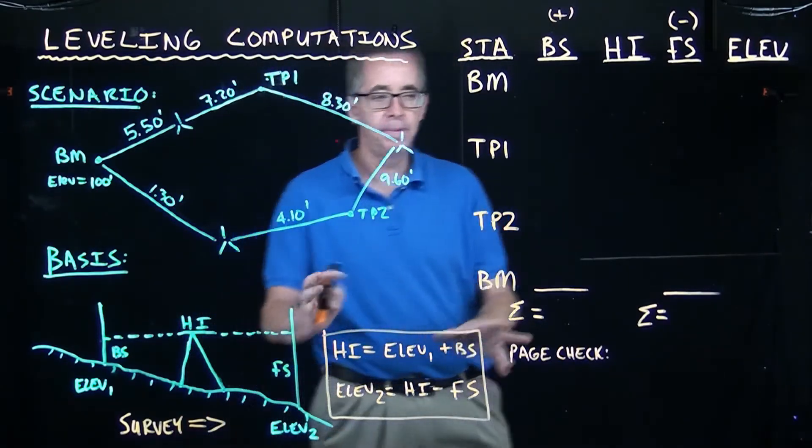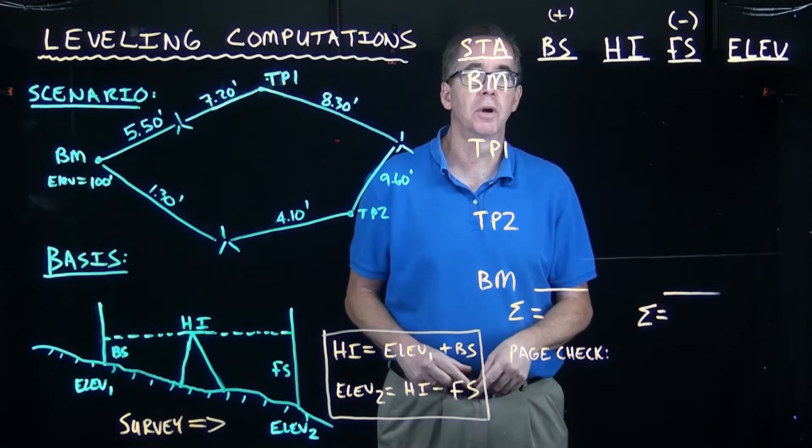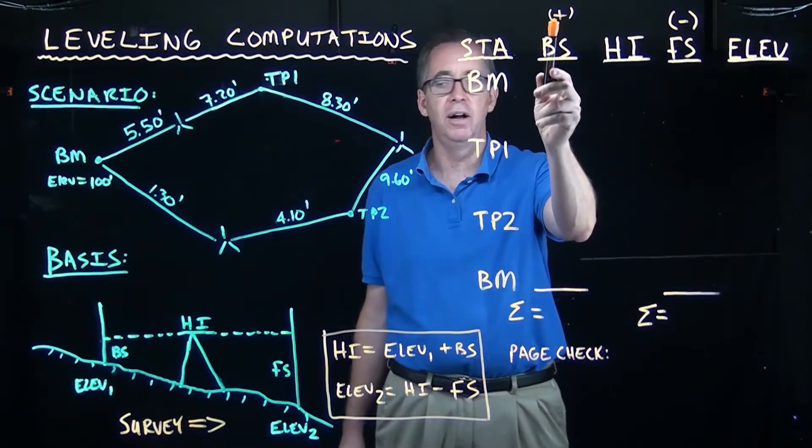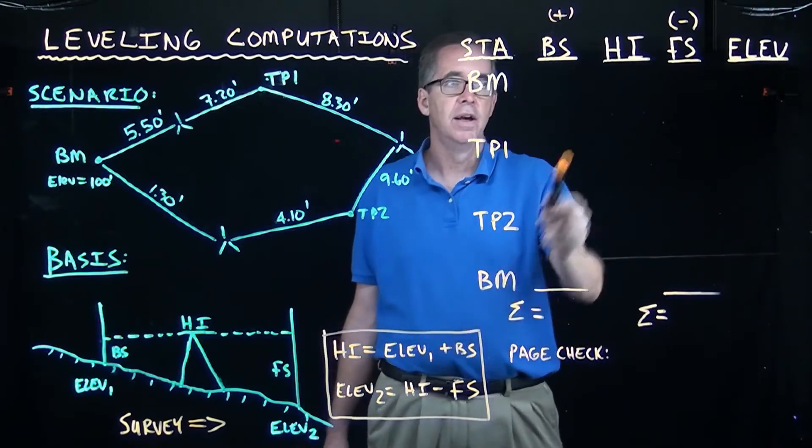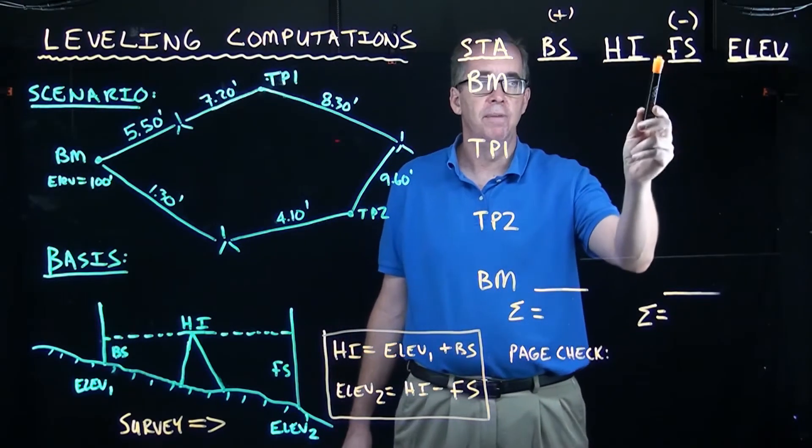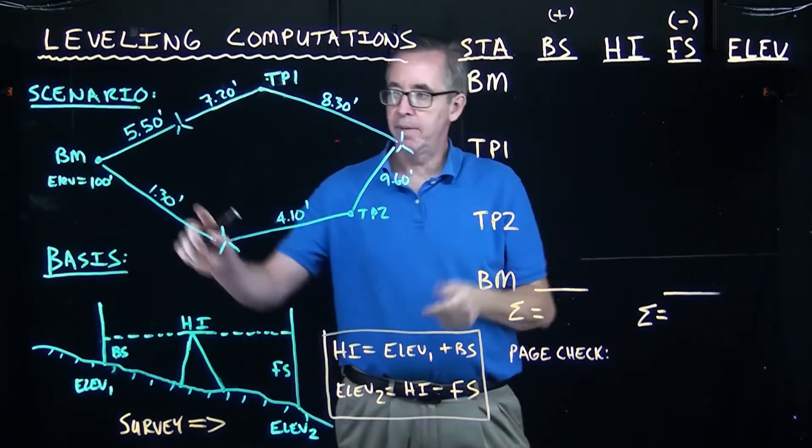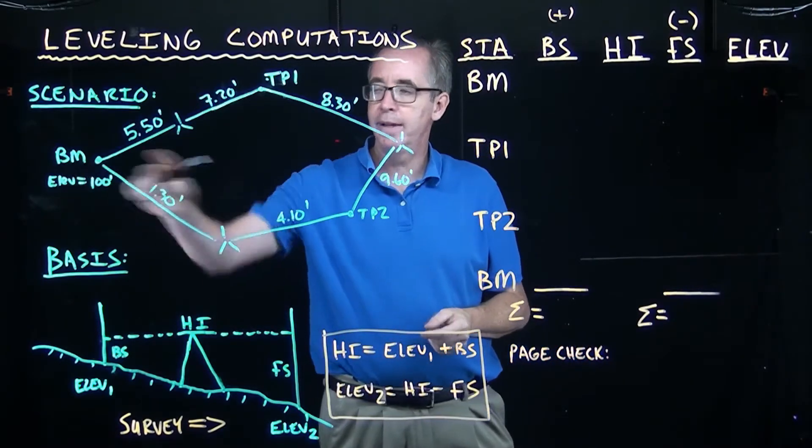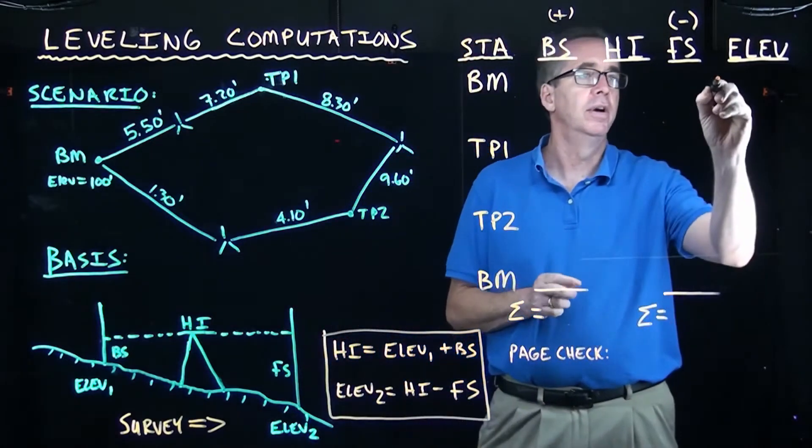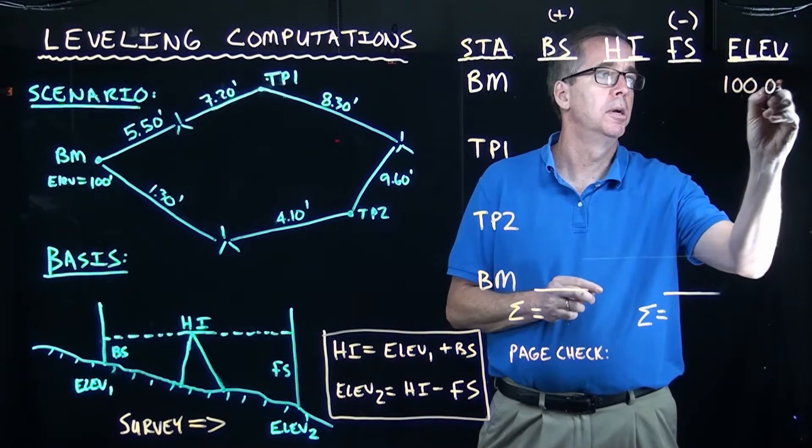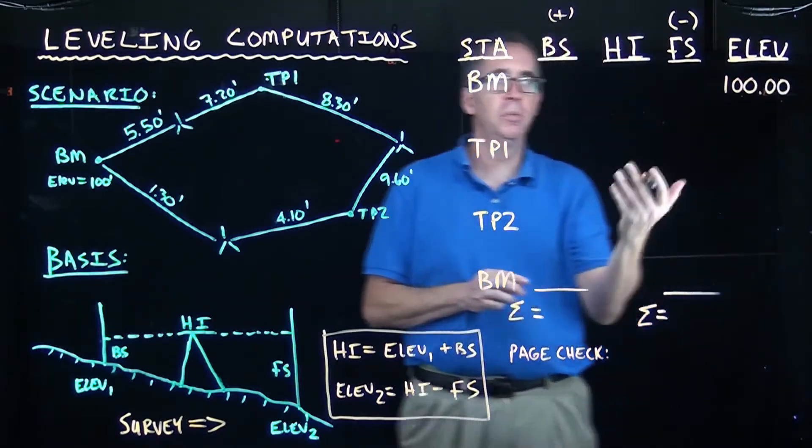Now, for simplicity, we set up this in a tabular form. Where I have my stations, I have my backside column, which I call my plus column because I'll be adding those readings. I have my height of instrument column, my foresight, and my elevation. Now, we're going to start, as I mentioned earlier, we're going to assume at the benchmark there's an elevation of 100 feet. So, 100 feet. That's just an assumed elevation.